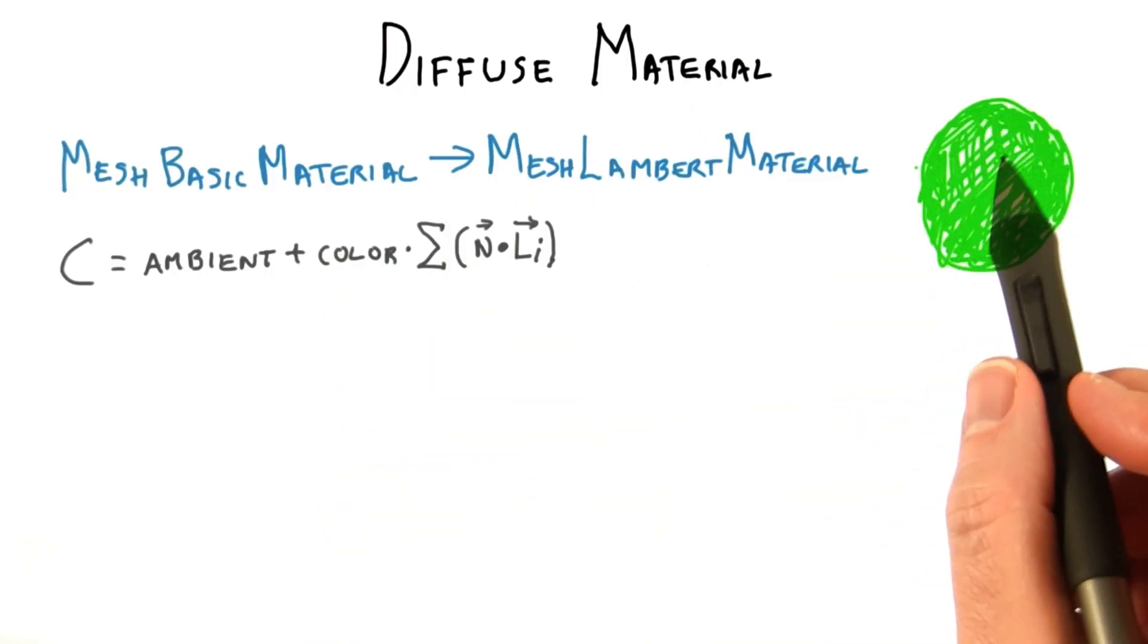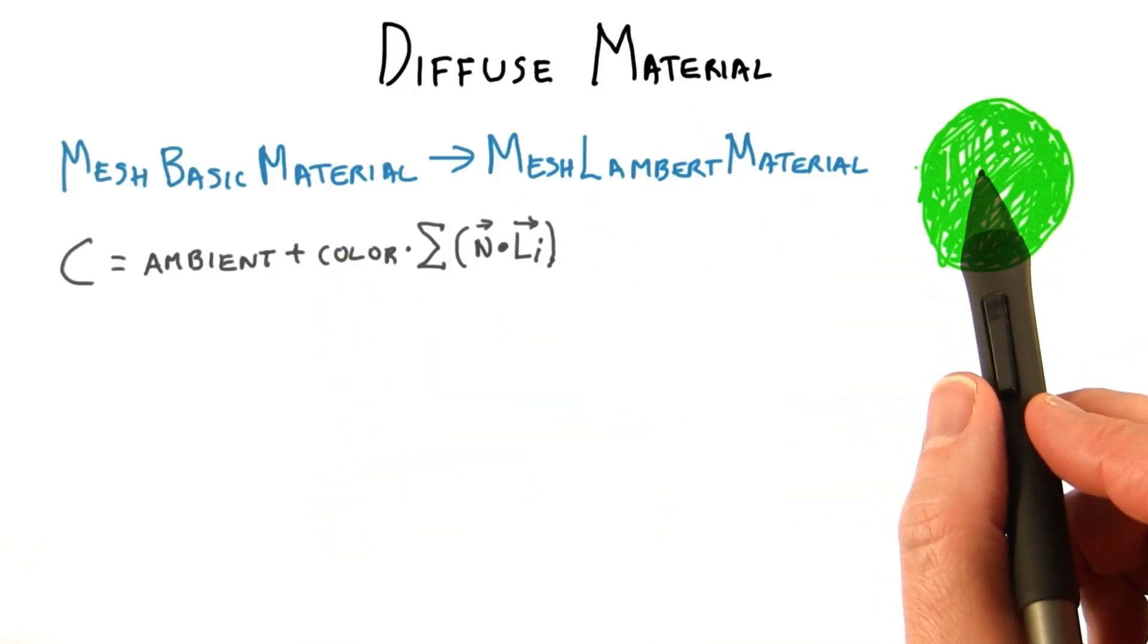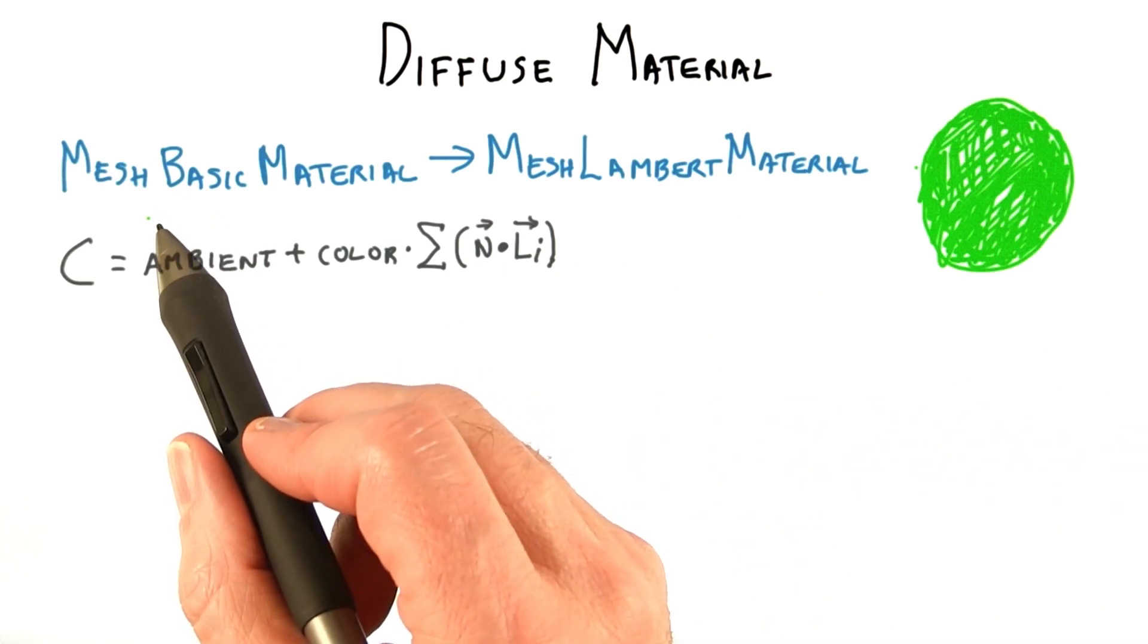In this exercise, you'll set up a diffuse material. The sphere in this scene starts with a solid color, unaffected by the lighting.